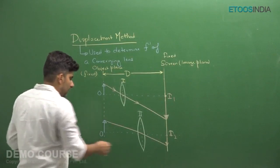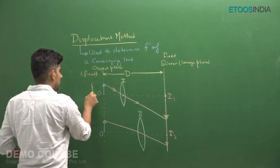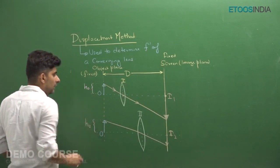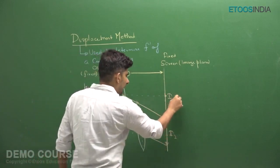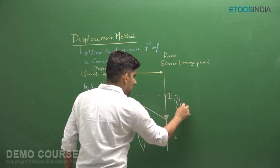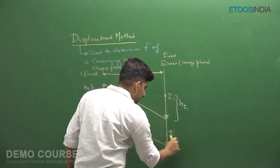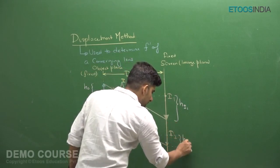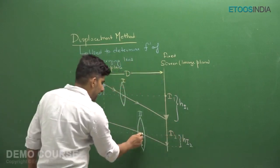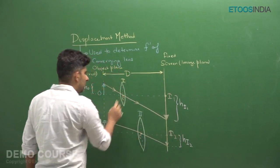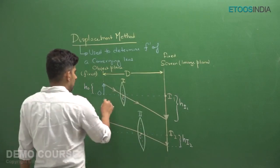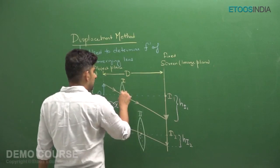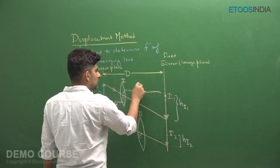If I take the height of the object to be HO, then in the first case the height of the image obtained is HI1, and in the second case the image has a height HI2. All heights are considered above or below the optical axis. For the first position of the lens, let the object distance be of magnitude x, so the magnitude of the image distance would be D minus x.